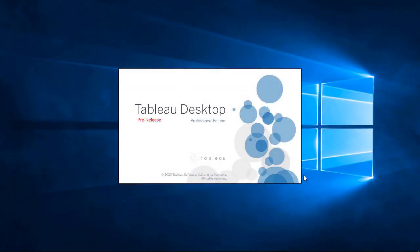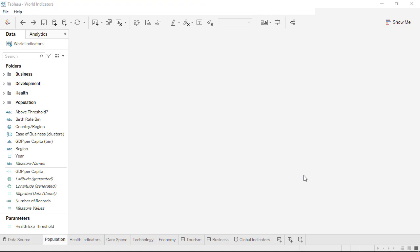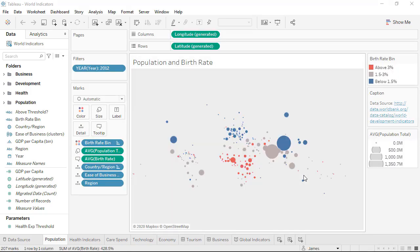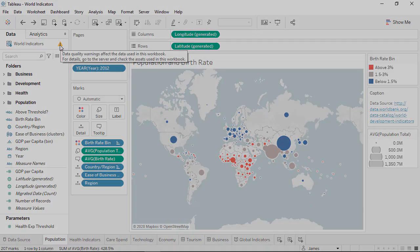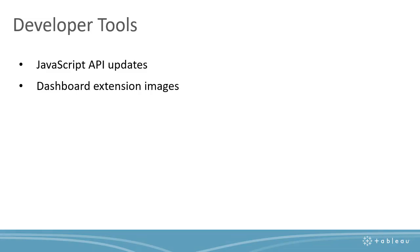Keep users informed of data quality warnings while they're performing their analysis in Tableau Desktop. With a quick indicator on the data source, users get the information they need about the state of the data. We've added a couple of new JavaScript APIs — please see the New Features Hub for more information. When you generate a PNG or PDF of a dashboard that you are viewing in Tableau Desktop, it will now render the extension zones image.